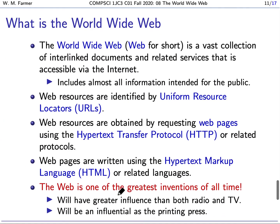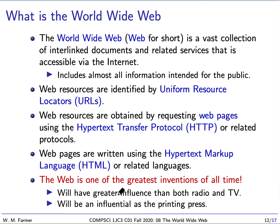So, what is the World Wide Web? It's a vast collection of documents and related services that are accessible via the Internet, and what makes them special is they're interlinked. One document is connected to another document, and when you explore this vast collection, you can be moving from document to document. What we now call the web includes almost all information intended for the public — the only exception is information that hasn't yet been put on the web.